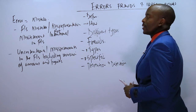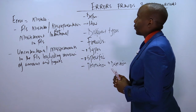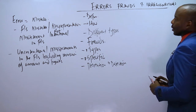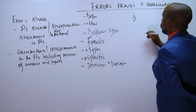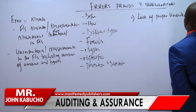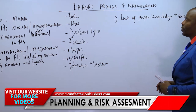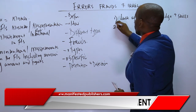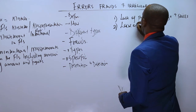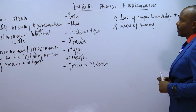Errors are mistakes in the financial statement. When you're preparing the financial statement, you may encounter an error — maybe because you don't understand things or because it's a new area for you. Errors are committed by people who lack proper knowledge and skills. If you are new to financial work, there are high chances you'll make mistakes. Number two: errors are committed due to lack of training. A new person in an organization must be trained to minimize errors.